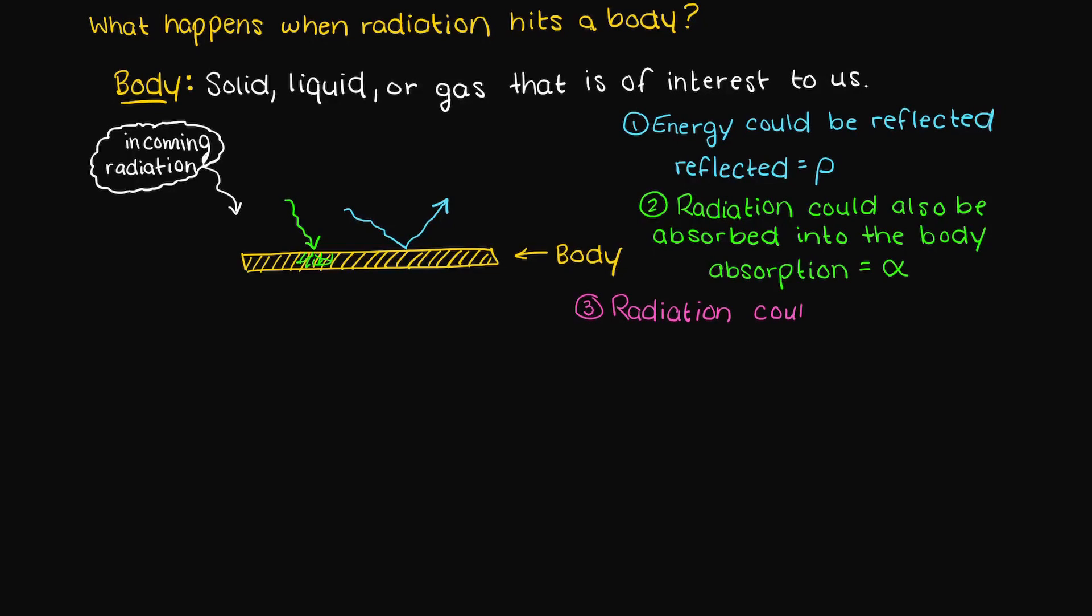Lastly, the radiation could be transmitted through the body, which means it just passes right through it, and this is represented by tau.